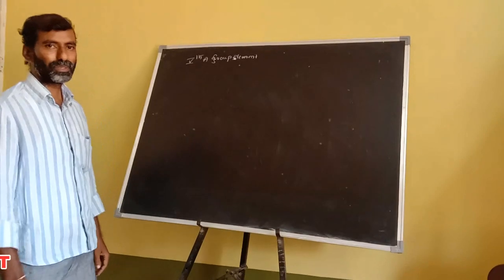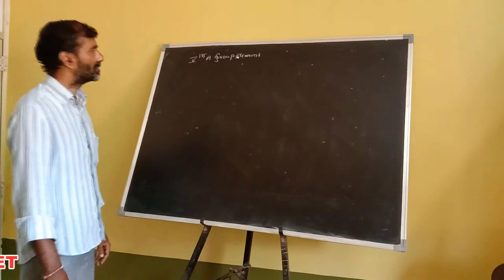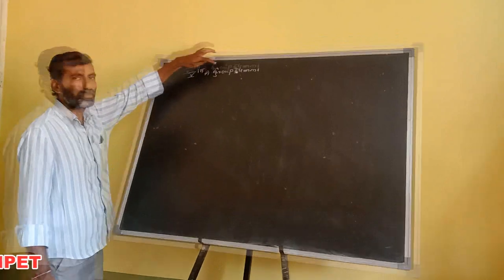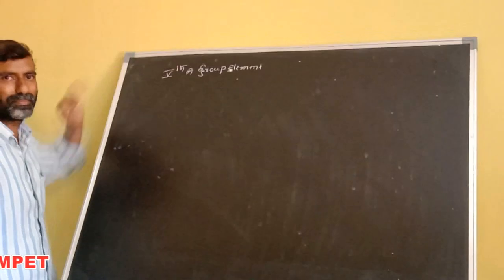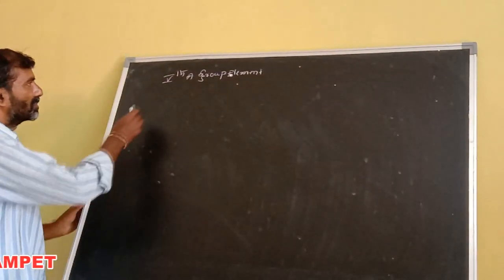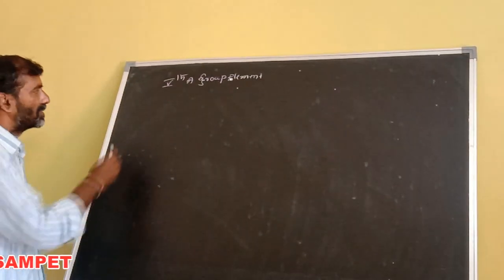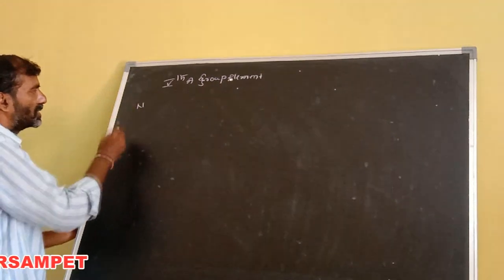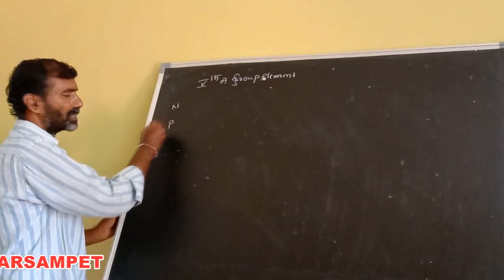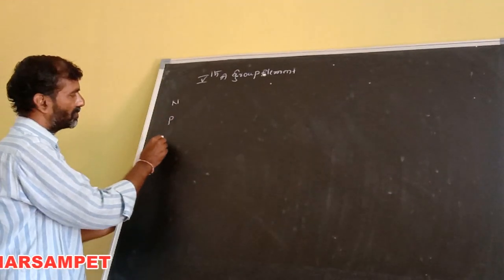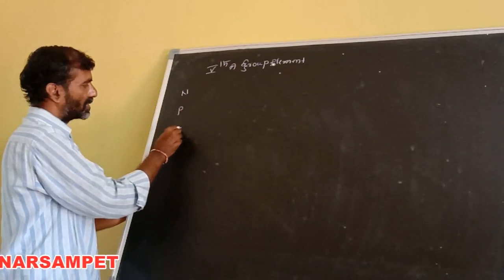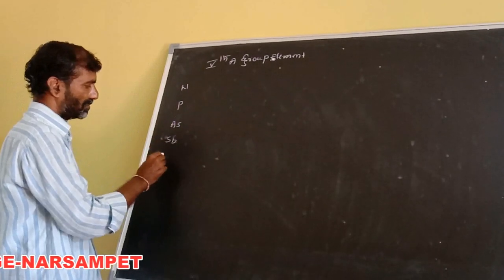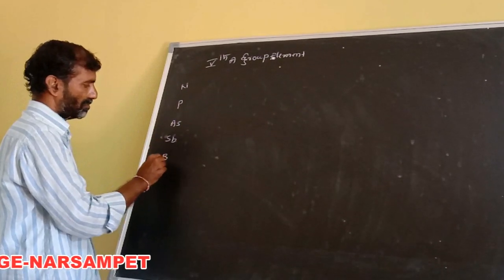Hello students, today we will discuss about the fifth group of elements. The fifth group of elements are: nitrogen, phosphorus, arsenic, antimony, bismuth.